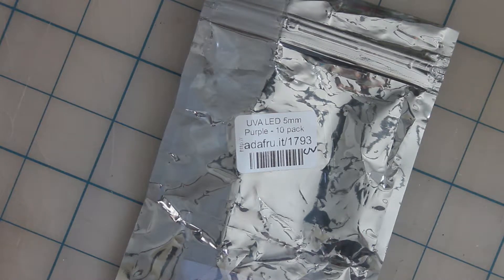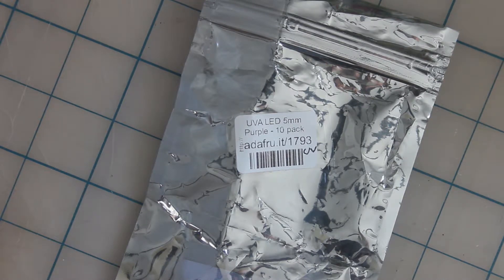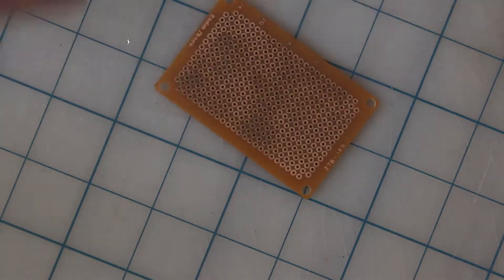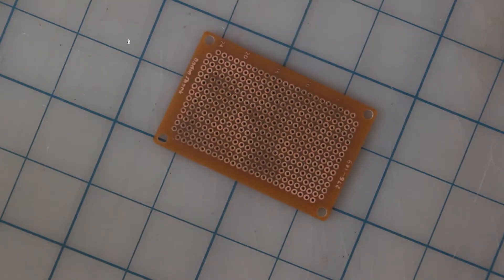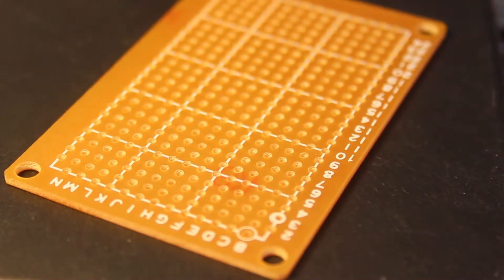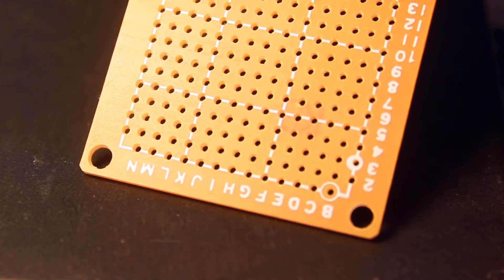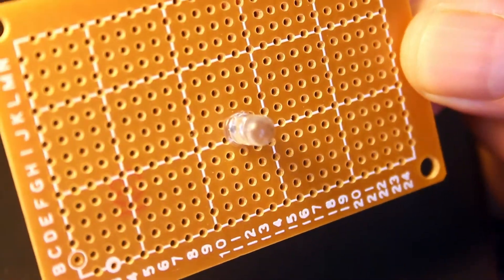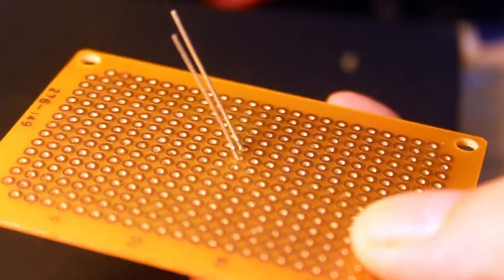For the second version I decided to do a UV black light. For this one I'm using some cheap one-sided perfboard. It has rings of copper around the holes on one side of the board. The other side has no copper at all. To use it, put the LED through the holes on the non-copper side, with the leads showing through on the side with the copper.